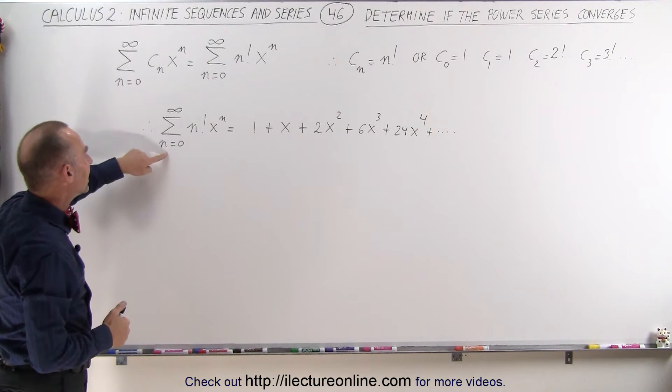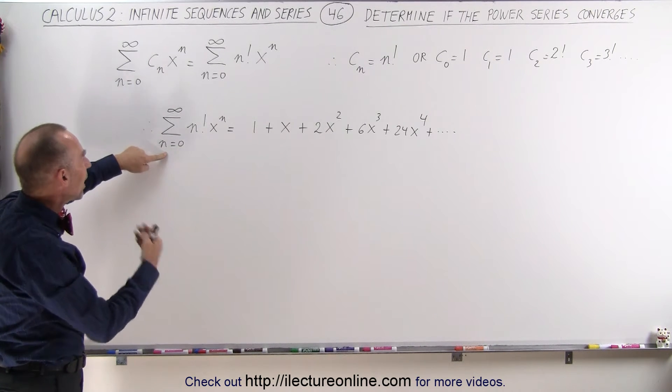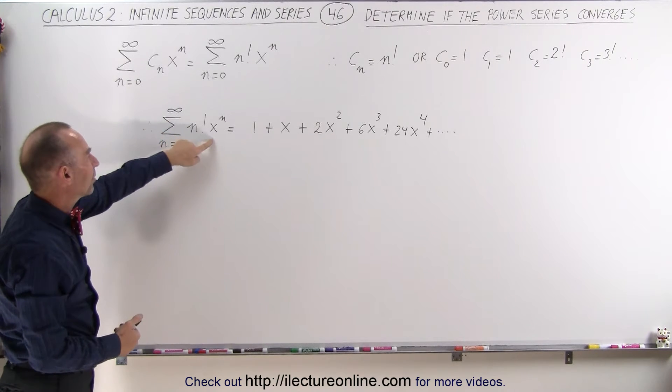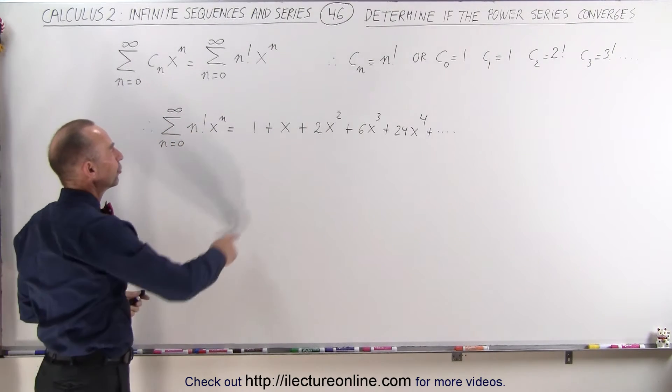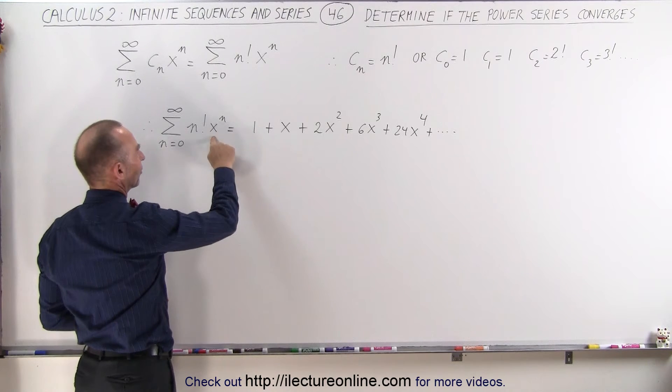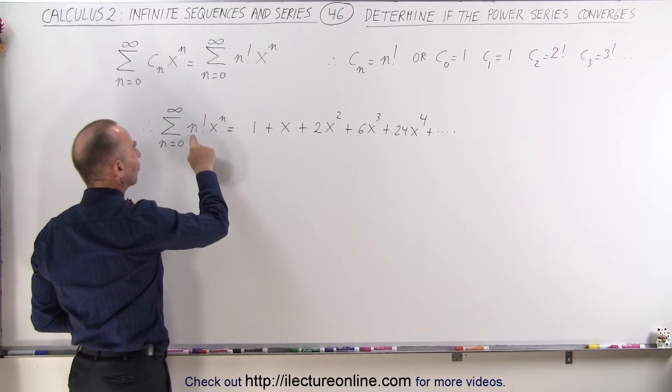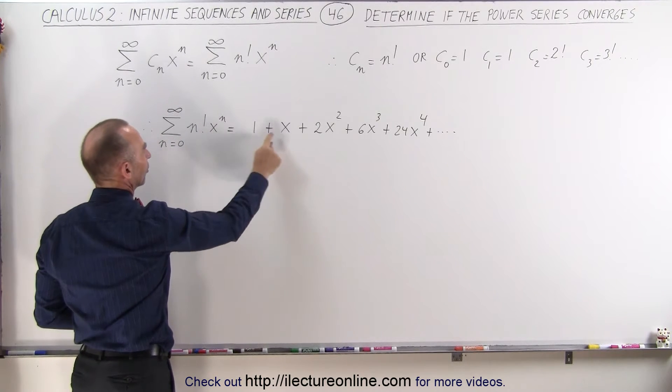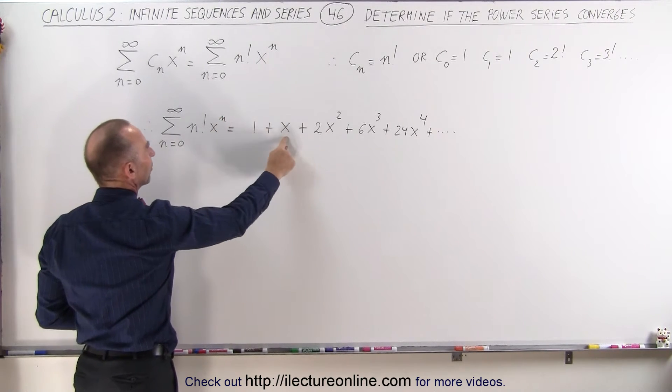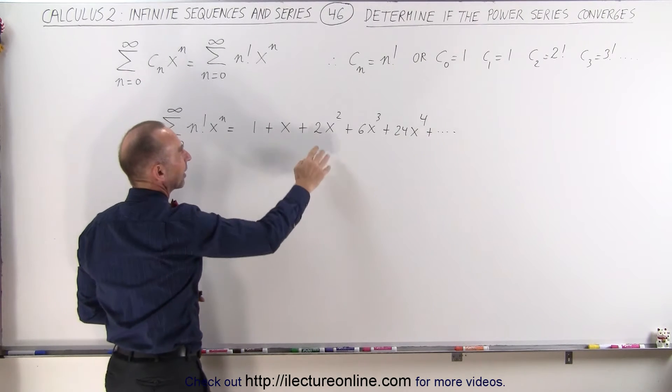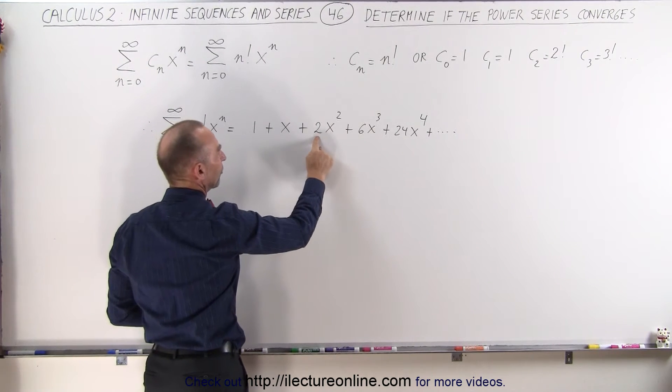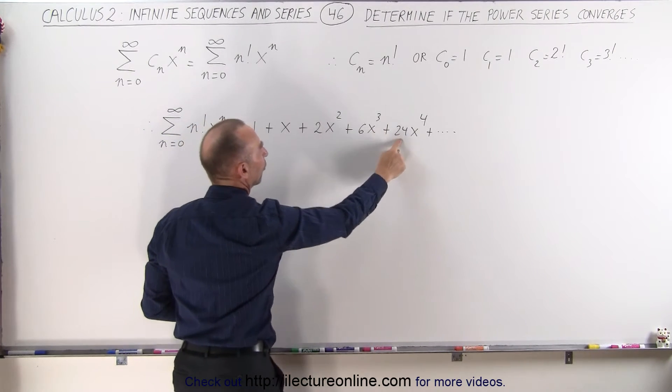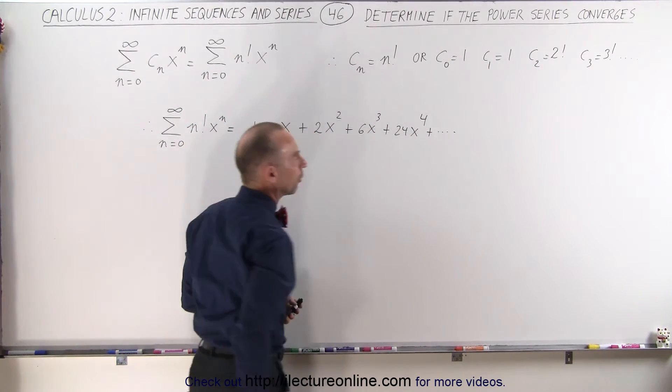Now we can write the infinite series, in this case the power series from n equals 0 to infinity of n factorial times x to the n, is equal to 1 for the first term, because x to the 0 is 1 and 0 factorial is 1 as well. Then the next term, 1 factorial is 1, and x to the n power is x. And then the next term will be 2 factorial times x squared, 3 factorial times x cubed, 4 factorial times x to the 4th, and so forth.